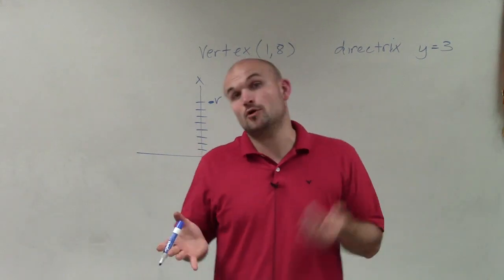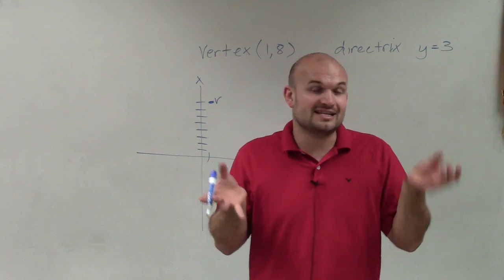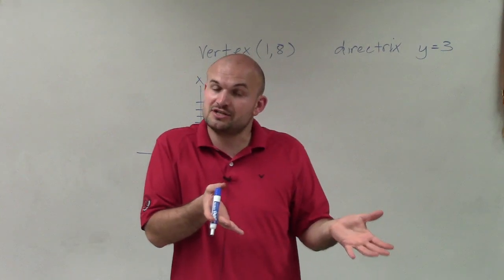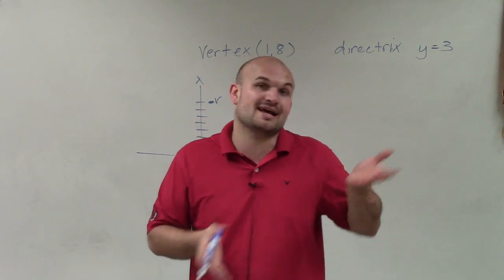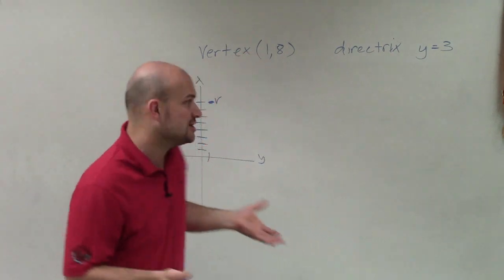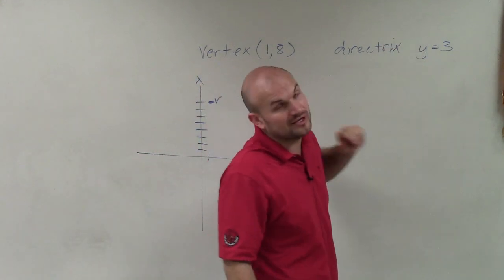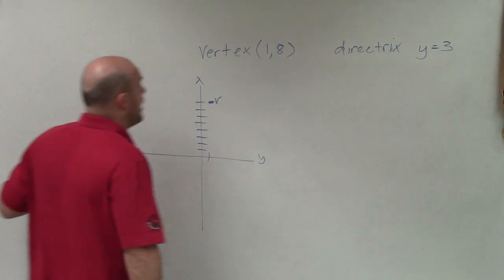Now the problem is I don't know if my parabola opens up, opens down, opens left, opens right. And it's very important if it's going to be a vertical axis of symmetry, that's going to be one equation compared to if it opens left to right, then it has a horizontal axis of symmetry, that's going to be another equation. So to decide what that looks like, I need to be able to graph the directrix, which is y = 3.